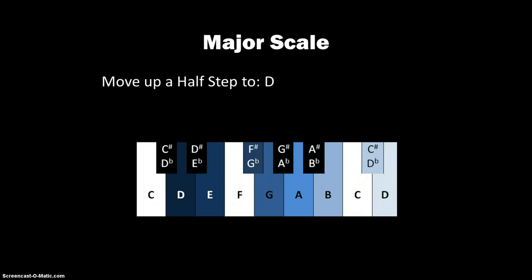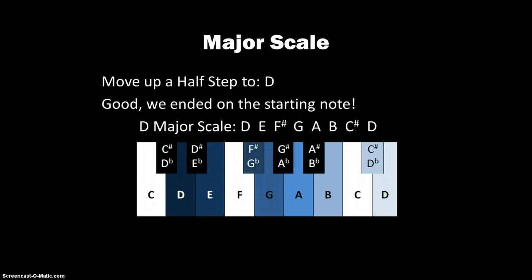That's very good, because we need to start the scale and end the scale on the same note, and we did that. So putting that all together, we get D, E, F sharp, G, A, B, C sharp, D. So again, this is all based on the ascending pattern of intervals, and to play it descending, you just play it backwards.